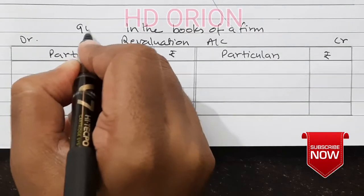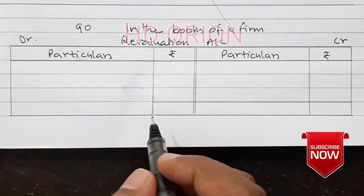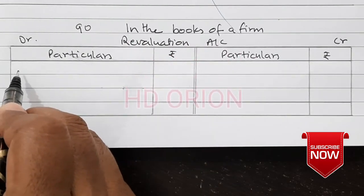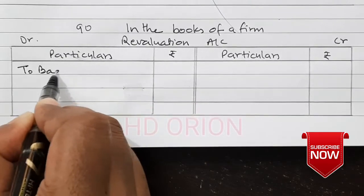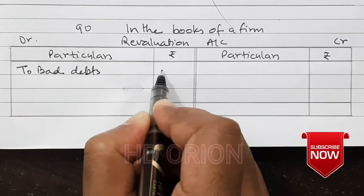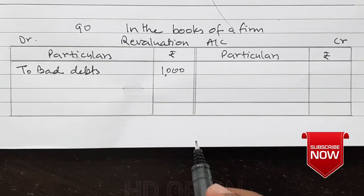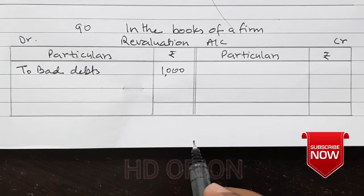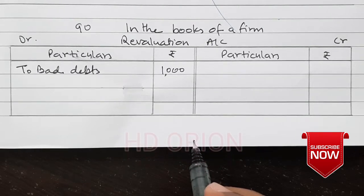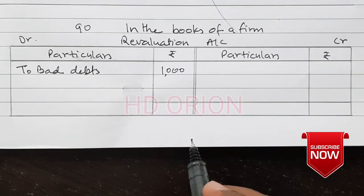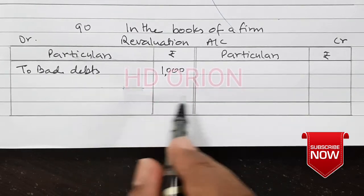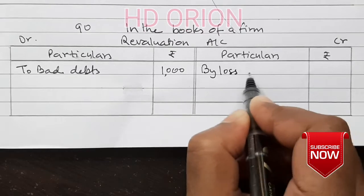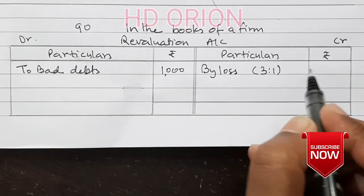Solution 90. Bad debts amounted to Rs. 3,000 and there is a provision for bad debts of Rs. 2,000, so a load of Rs. 1,000 will be in the revaluation account — to bad debts Rs. 1,000. Next, market value of investment decreased by Rs. 4,500 but there is an Investment Fluctuation Reserve of more than Rs. 4,000, so it will be fully adjusted in the Investment Fluctuation Reserve. Revaluation will remain unaffected. By loss on revaluation, it will be paid to old partners in their old ratio: Rs. 1,000.